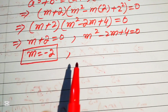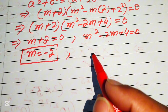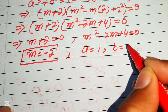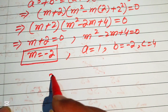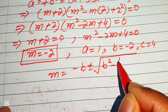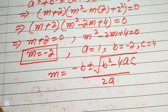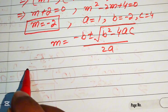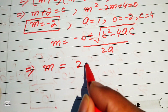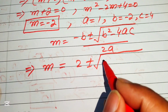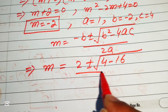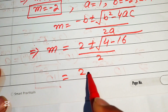To solve m² minus 2m plus 4 equals 0, we again use the quadratic formula. The coefficients are a equals 1, b equals minus 2, and c equals 4. Substituting into the quadratic formula, we get m equals plus 2 plus or minus square root of (4 minus 16) divided by 2, which gives 2 plus or minus square root of minus 12, divided by 2.